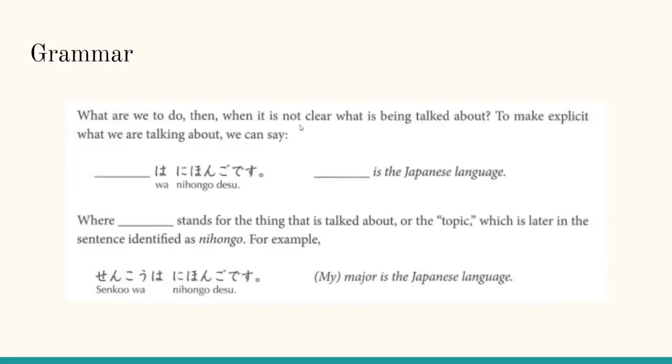What are we to do, then, when it is not clear what is being talked about? To make explicit what we are talking about, we can say watashi wa nihongo desu, or something wa is the Japanese language, where something stands for the thing that is talked about, or the topic, which is later in the sentence identified as nihongo. For example, senkou wa nihongo desu would mean my major is the Japanese language.